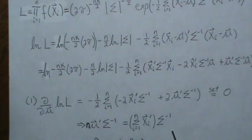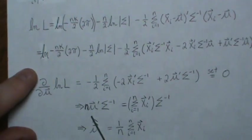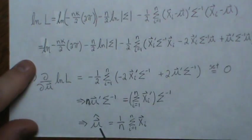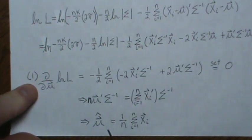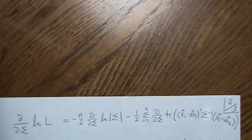This piece, there's n of them. This piece is the sum. We can post-multiply by sigma, so those go away, and then we divide by n, and we get that the MLE of mu is the sample mean.